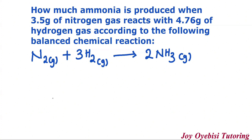They gave us two values, which means we have nitrogen and we have hydrogen, and we do not know which one of these reactants is the limiting reactant. So the easiest way to go about this is to use each of the reactants to solve for the mass of ammonia. The one that gives you the smaller mass is the limiting reactant, and that smaller mass is what you report as the grams of ammonia produced.